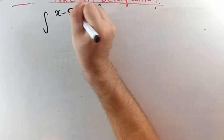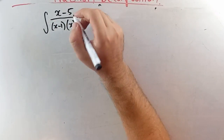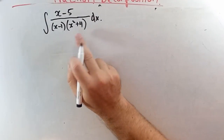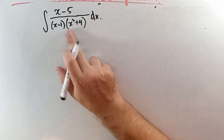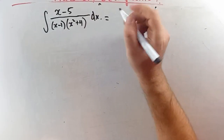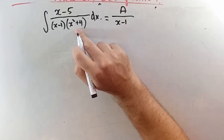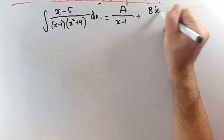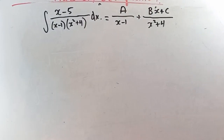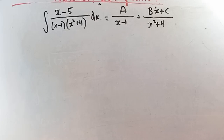The next integral is x minus 5 over (x minus 1)(x squared plus 4) dx. Here x squared plus 4 cannot be factored into linear factors — it's an irreducible quadratic. For this case, the partial fraction form is a over x minus 1 plus (bx plus c) over x squared plus 4.